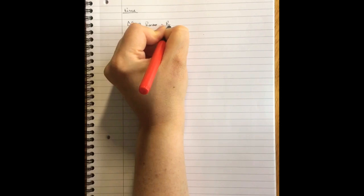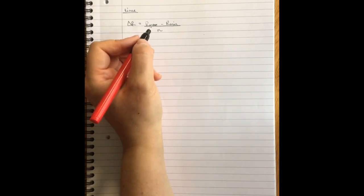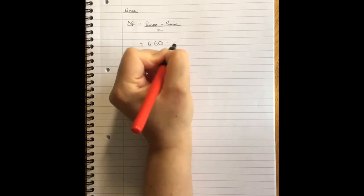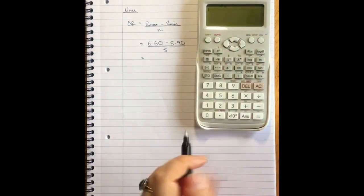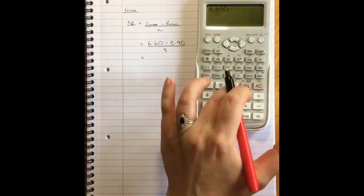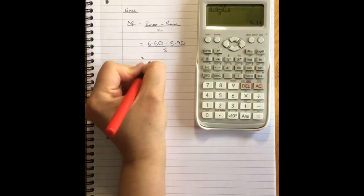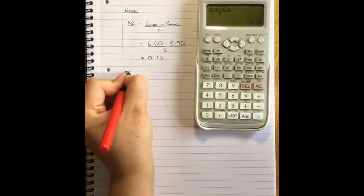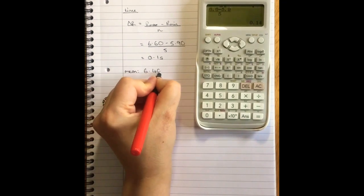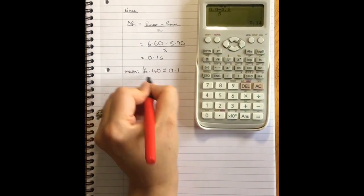One last time for my times. Delta r equals r max minus r min over the number. So for me that's 6.60 minus 5.90 all over five. And that is 0.1 seconds. So my mean there is 6.40 plus or minus 0.1 seconds.